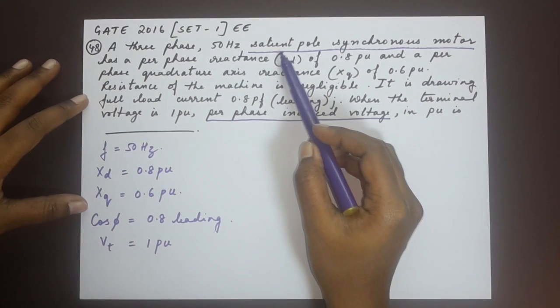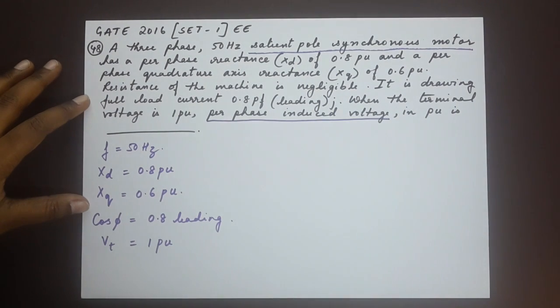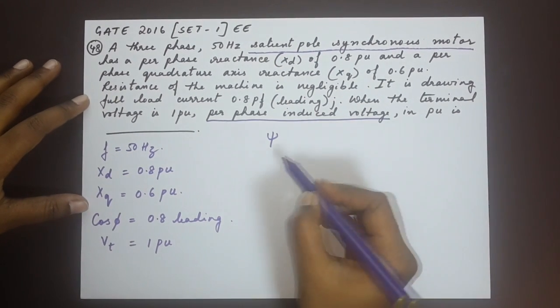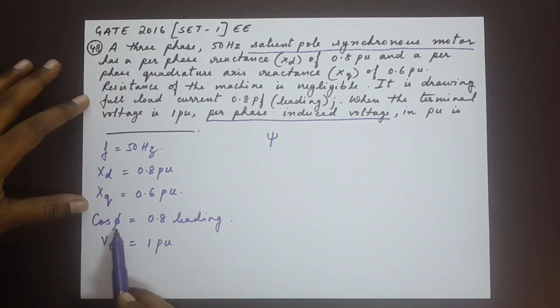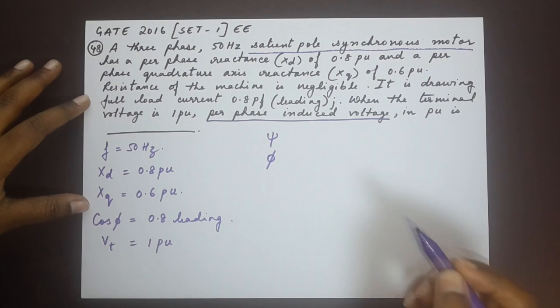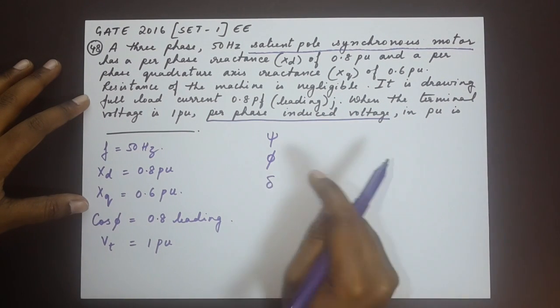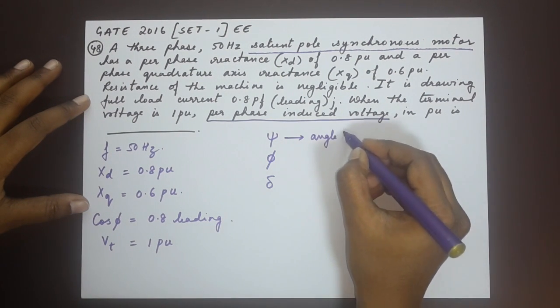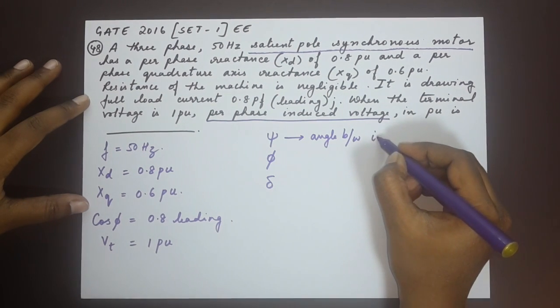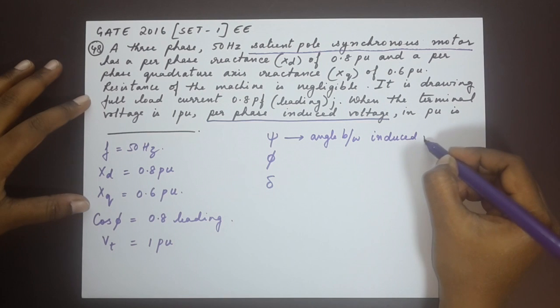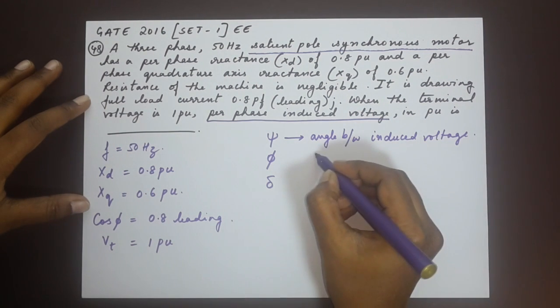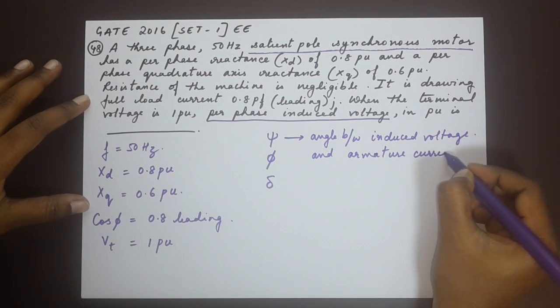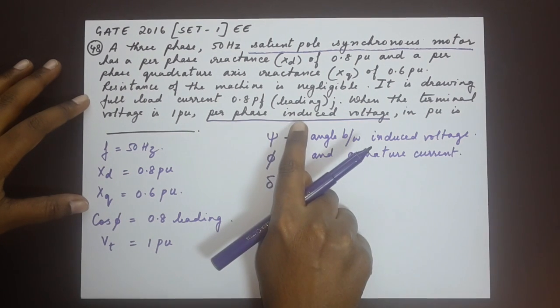Now, when the question says salient pole synchronous motor, there are a couple of other terms that you have to remember and note. The angles psi, phi is what we already have. Let me note that down as well, phi and delta. These three angles are quite important. While psi is the angle between induced voltage and armature current.